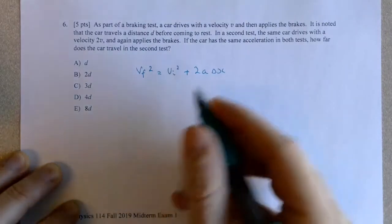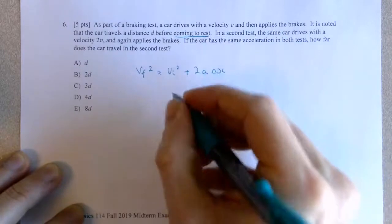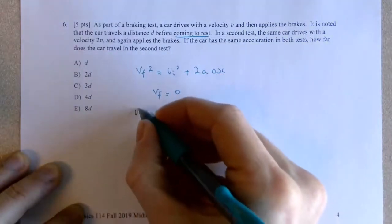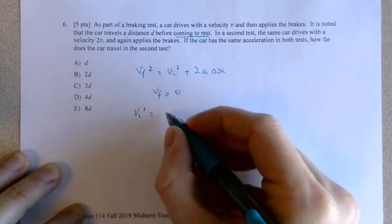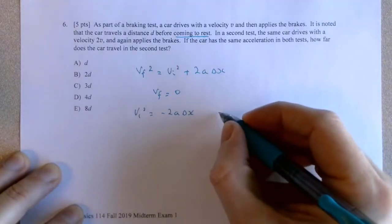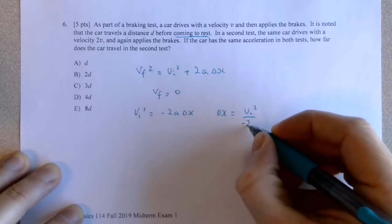In a case where the braking test and the object is coming to rest after traveling distance D, the final speed will be equal to 0. So VI squared will be equal to negative 2A delta X, or I can write that delta X will be equal to VI squared divided by negative 2A.